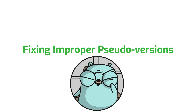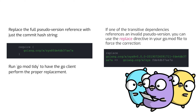In order to move to Go 1.13, a developer must correct all pseudo version references that don't align with the previous requirements. Otherwise, the go client will flag an exception for an invalid pseudo version. Fortunately, this is pretty easy to do through your go.mod file where your pseudo version references are made. If the go.mod file's require directive has an incorrect pseudo version, this can be corrected by replacing the full pseudo version reference with just the commit hash string, then running go mod tidy to have the go client perform the proper replacement for you. And if one of the transitive dependencies references an invalid pseudo version, you can use the replace directive in your go.mod file to force the correction.